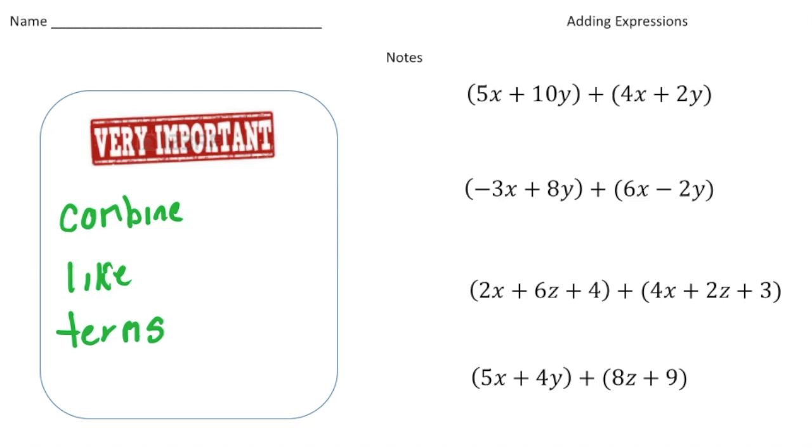For this first one we're going to combine the 5x and the 4x. So 5x and 4x is 9x. And then we also have a 10y and a 2y. So 10y and 2y is 12y, and that's simplified. So 9x plus 12y is the simplified version of 5x plus 10y plus 4x plus 12y.